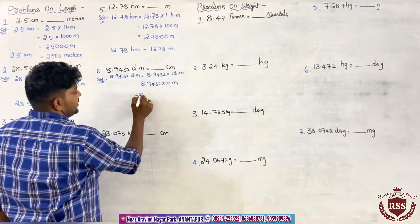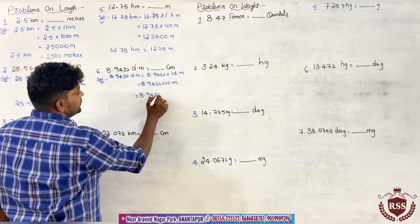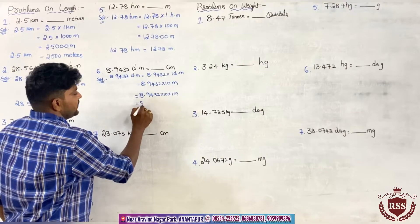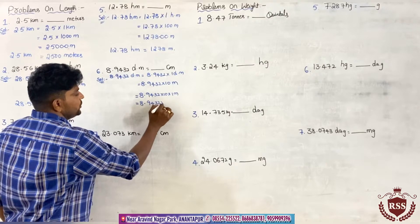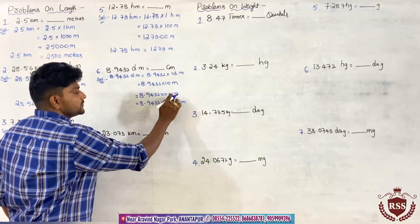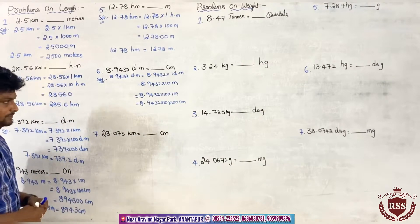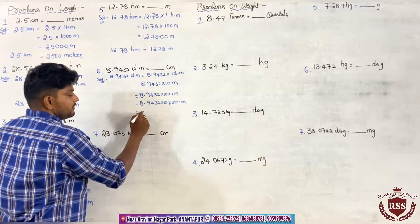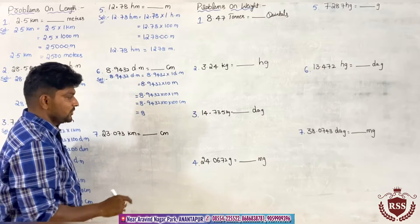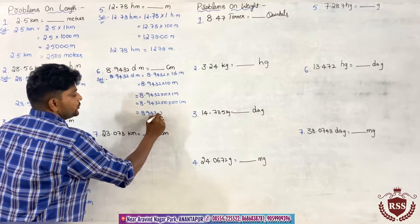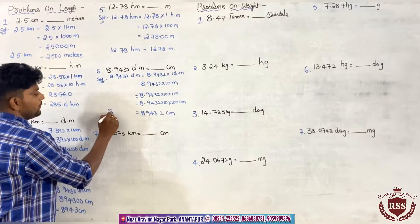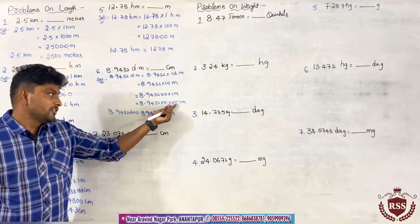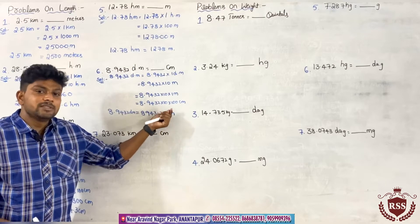So 8.9432 into 10 into 1 meter. 1 meter equals 100 centimeters. So it will be 8.9432 into 10 into 100 centimeters. We multiply with 1000, so the decimal point moves forward by three digits. It will be 8943.2 centimeters, which is 8.9432 decameters.